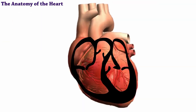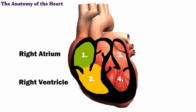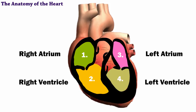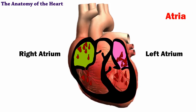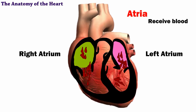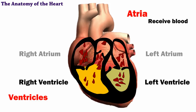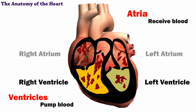Every heart has four chambers: the right atrium, the right ventricle, the left atrium, and the left ventricle. The two upper chambers, or atria, receive blood. The two lower chambers, or ventricles, pump blood.